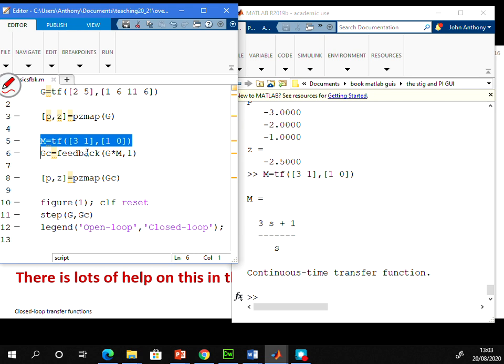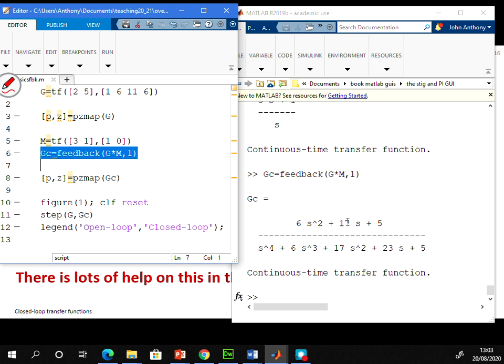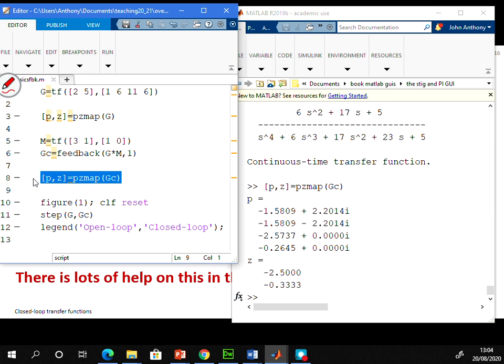And then I'm going to use the feedback command to generate gc. Now if I want the mapping from r to y, I use it like this, g times m comma 1. So I run that. And you can see now I've got the closed loop transfer function for this system. Now you wouldn't really like to do that on pen and paper. It's quite messy. But you can see how easy it is with MATLAB. Again, if I want to, I can look at the poles and zeros of this closed loop transfer function. And there they are. And you're never going to do those on pen and paper. You can see they're quite difficult.